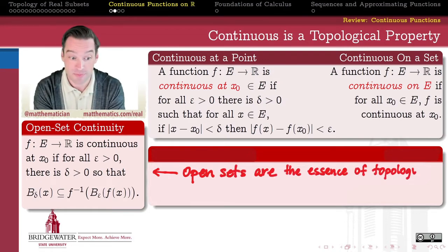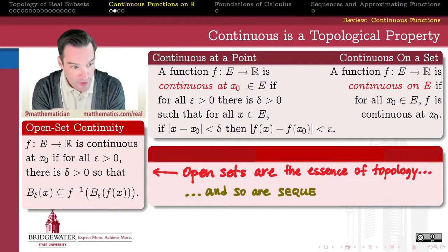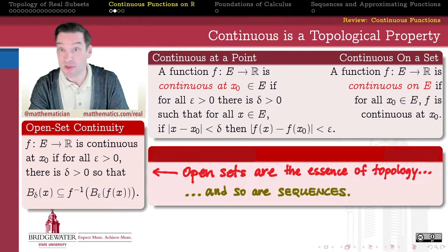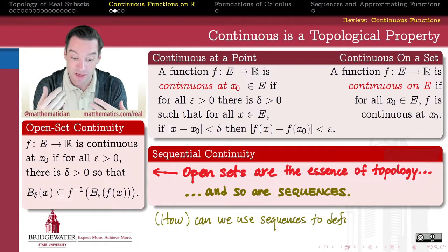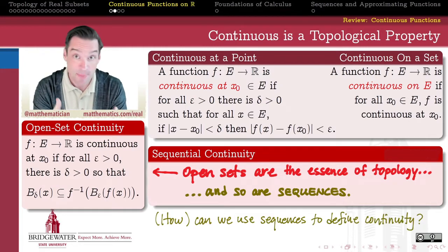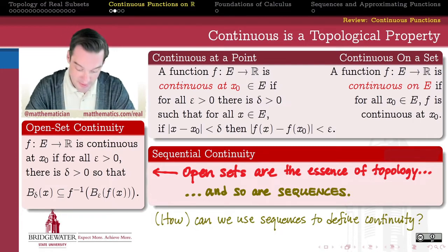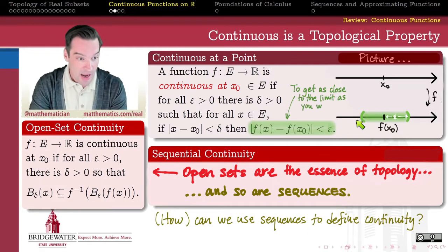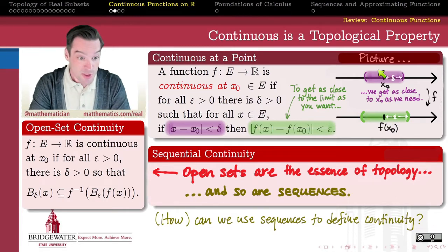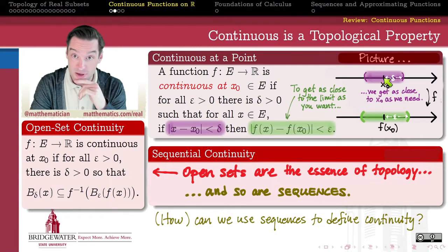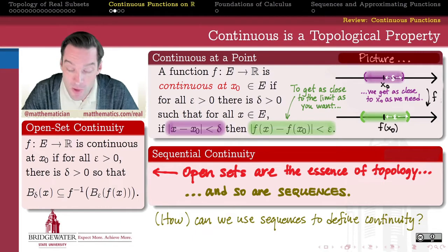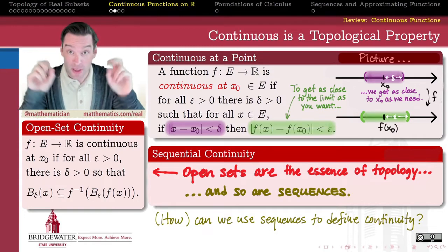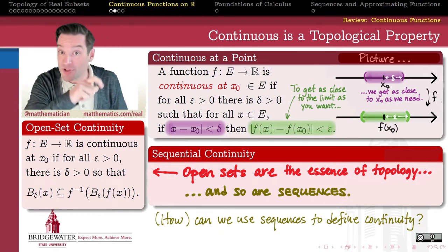What would a sequential definition of continuity look like? The epsilon-delta definition of continuity seems very similar in kind to the epsilon-N definition of convergence for a sequence from our first semester of real analysis. The definition of being continuous at x₀ means I can get as close to f(x₀) as you want, just by getting close enough to the domain point x₀. We can get close to something by choosing an x which is delta-close to x₀, but we can also get arbitrarily close by walking along a convergent sequence whose limit is that point.